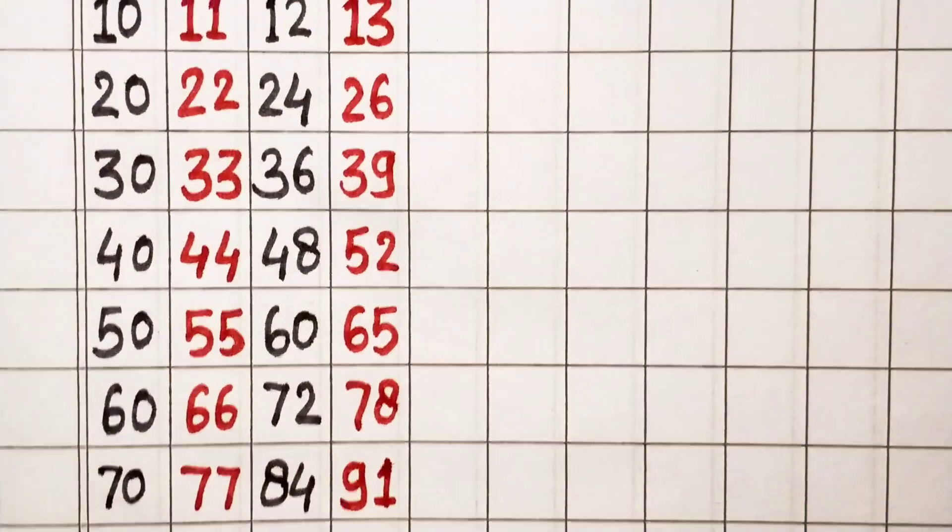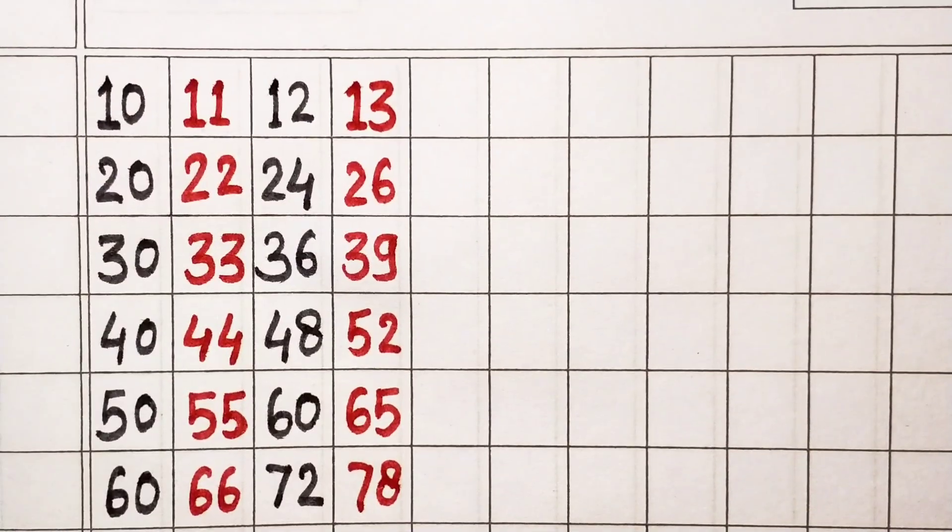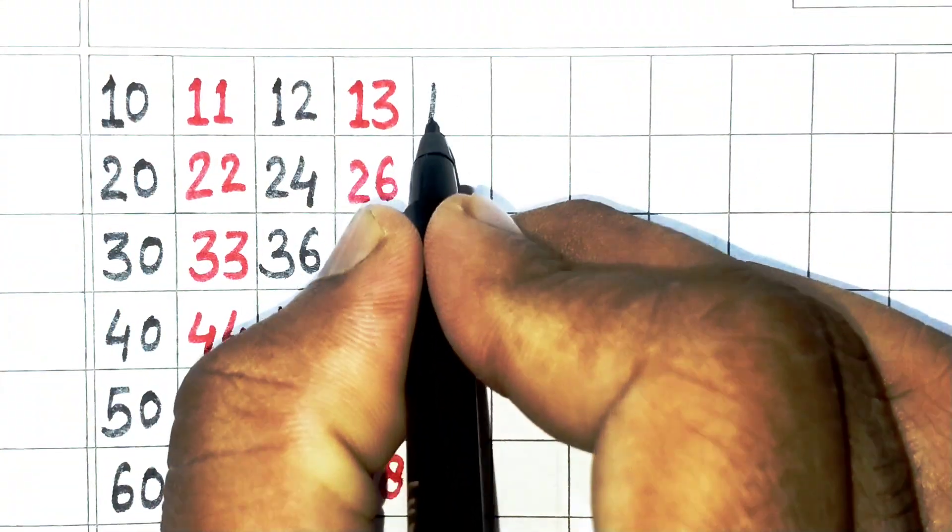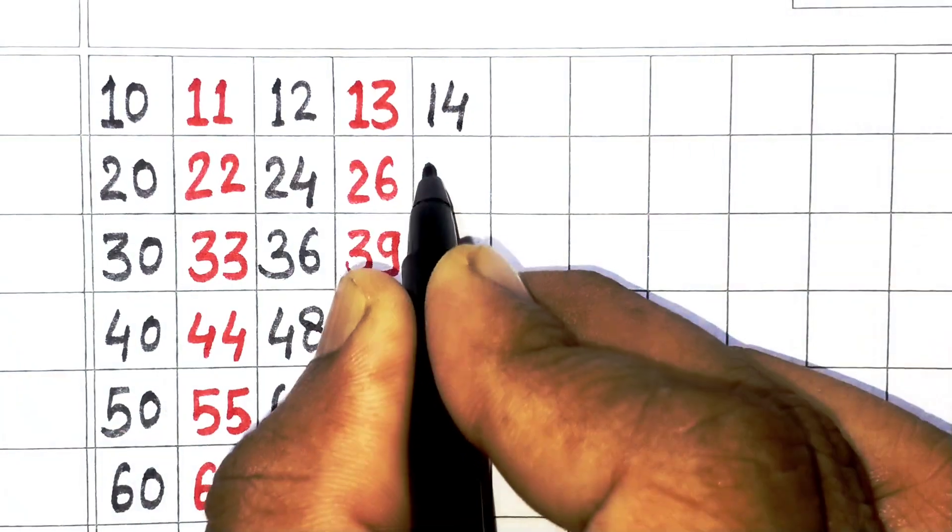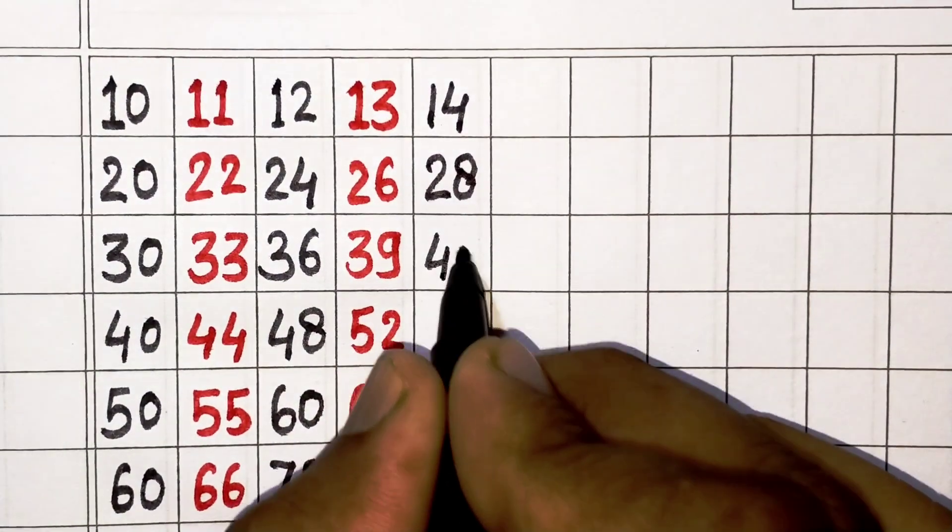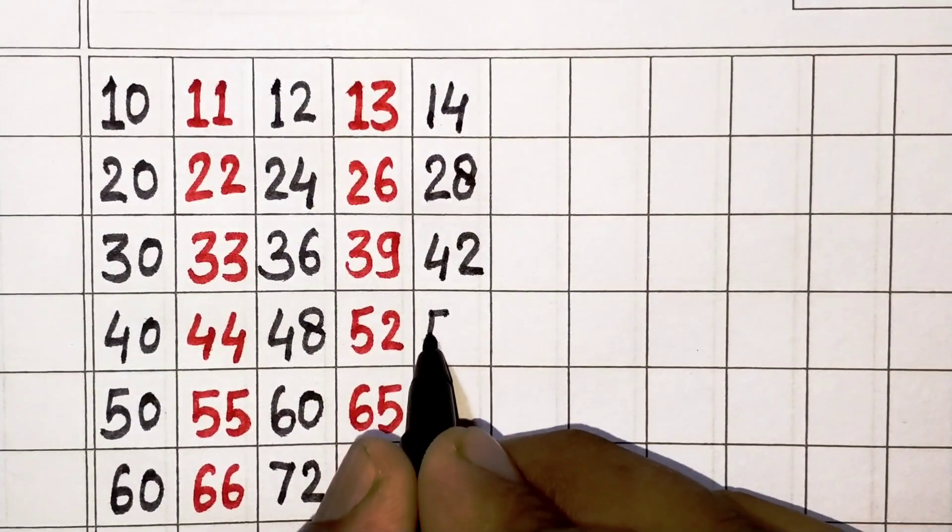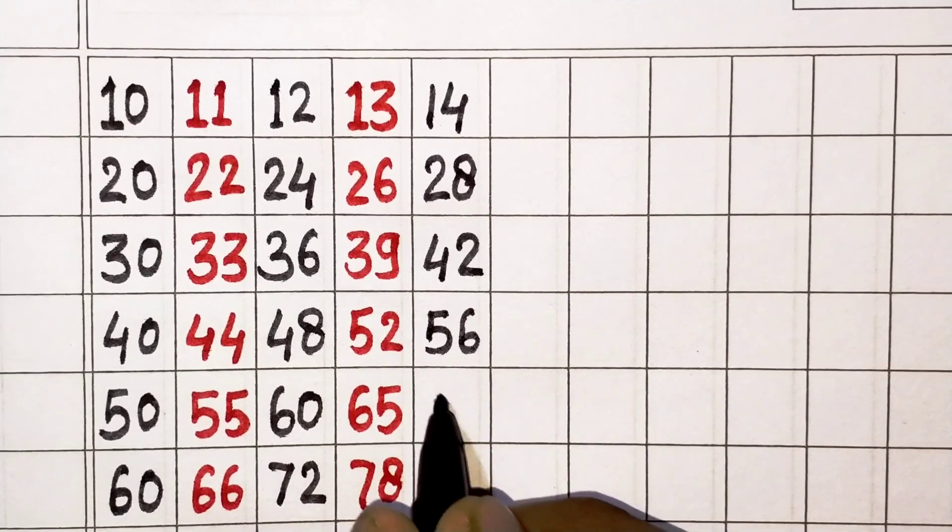Next, 14. 14 times 1 is 14, 14 times 2 is 28, 14 times 3 is 42, 14 times 4 is 56, 14 times 5 is 70.